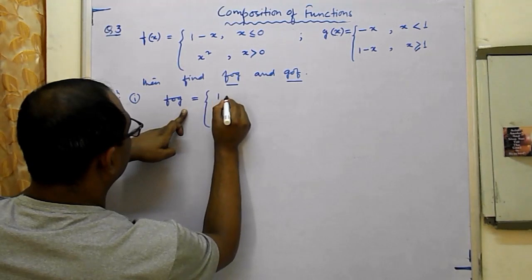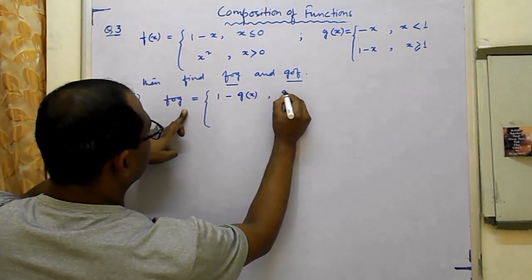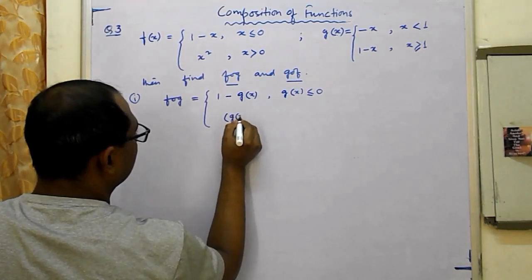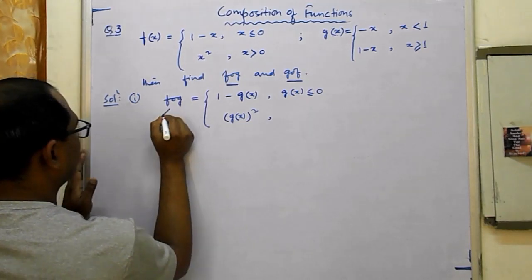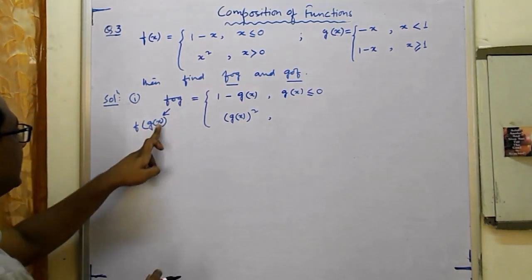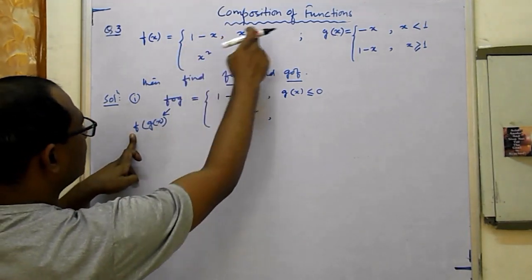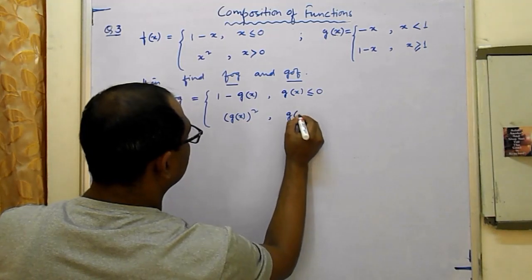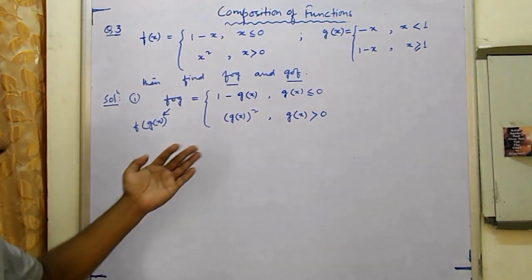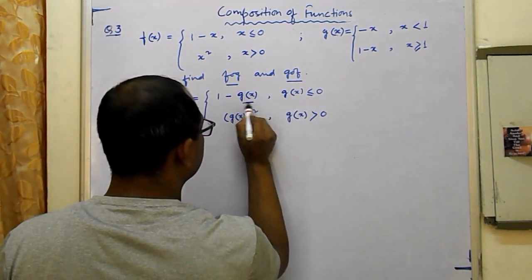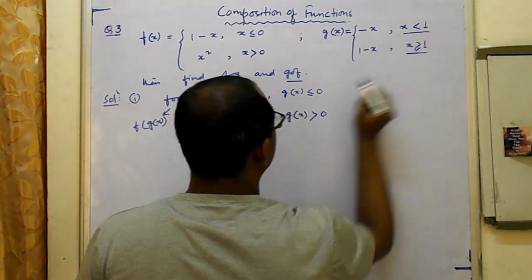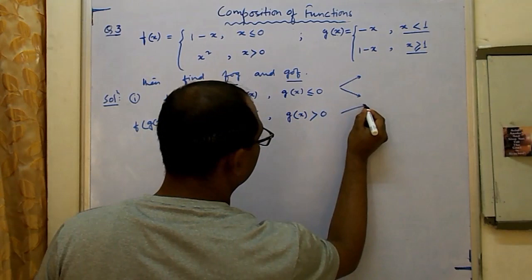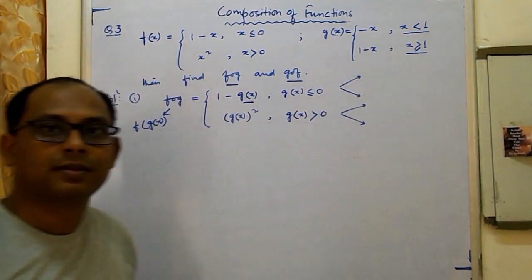We now substitute g(x). For the case g(x) = −x (when x < 1): 1 − (−x) = 1 + x when −x ≤ 0 (i.e., x ≥ 0), combined with x < 1 gives x ∈ [0,1). For g(x) = 1 − x (when x ≥ 1): 1 − (1 − x) = x when 1 − x ≤ 0 (i.e., x ≥ 1), giving x ∈ [1, ∞). For (−x)² = x² when −x > 0 (i.e., x < 0) and x < 1, the intersection is x ∈ (−∞, 0).